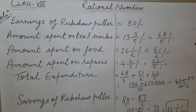We know how to add these rational numbers — we take the LCM. LCM of 5 and 2 is 10. So 5×2 = 10, giving 68×2 = 136. Then 2×5 = 10, giving 51×5 = 255. And 5×2 = 10, giving 22×2 = 44.